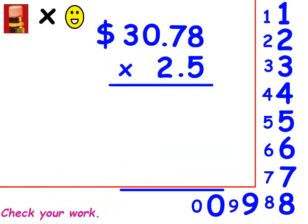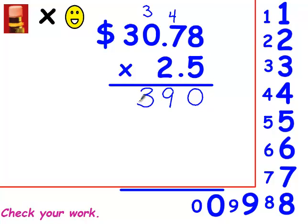The first thing I'm going to do is multiply by 5. 5 times 8 is 40. 7 times 5 is 35, plus 4 is 39. 5 times 0 is 0, plus 3 is 3. And 5 times 3 is 15. You should have had 1, 5, 3, 9, 0 on the first row.